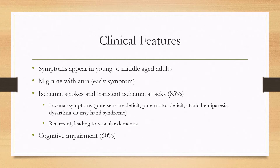For the clinical features, patients are normally asymptomatic as children, and then as they become young adults and middle-aged adults they'll start having symptoms. Migraine with aura can present in their 20s or 30s. Ischemic strokes and transient ischemic attacks are the most common symptom and they present earlier than usual — perhaps in someone's 40s or 50s.